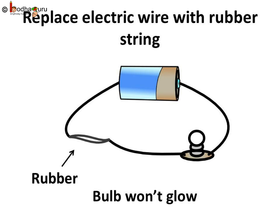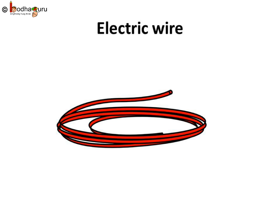Now let us use a rubber string instead of wool. Here again, we see the bulb doesn't glow when we replace a part of the circuit with the rubber string. So we conclude, not all materials allow electric current to pass through them.